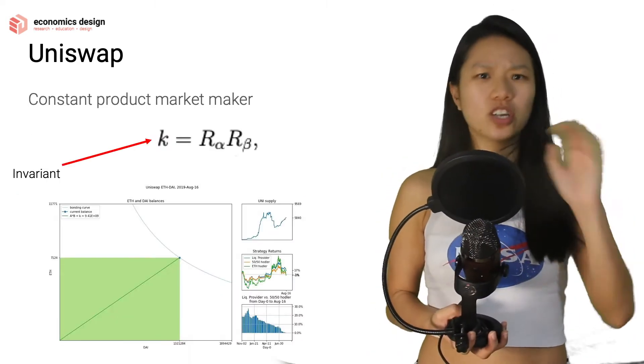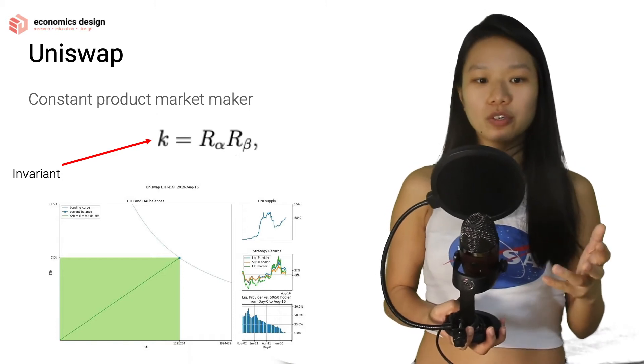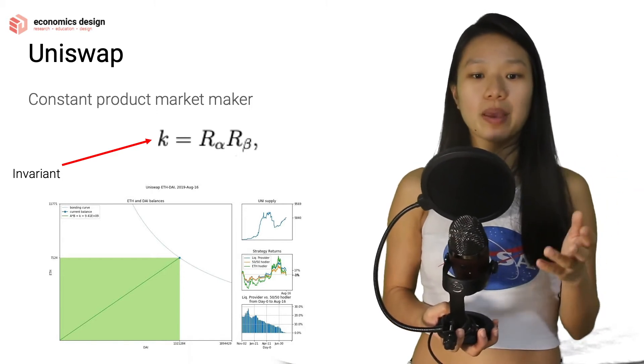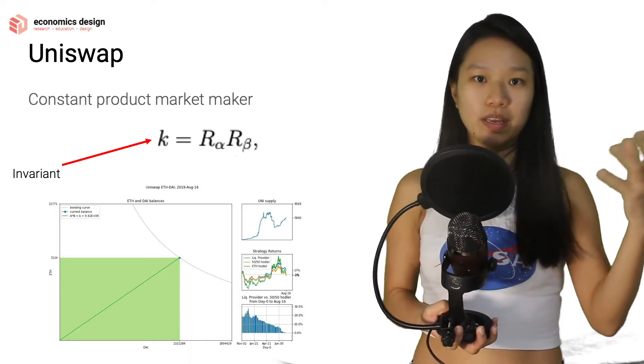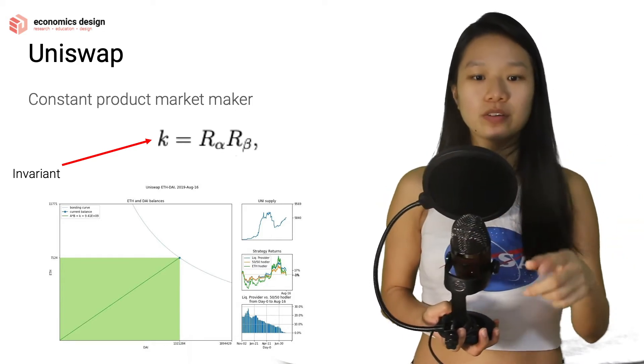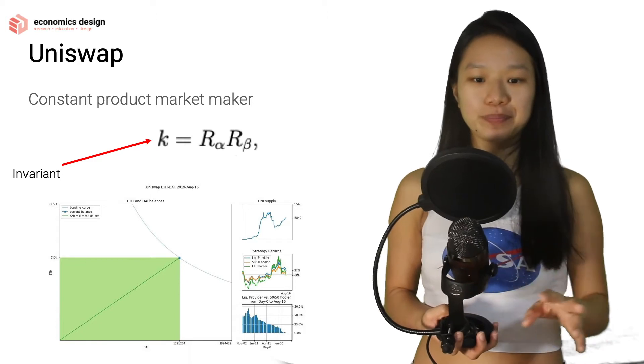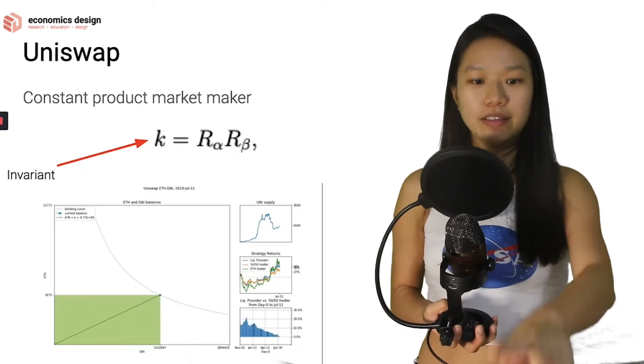With Uniswap, things are a lot simpler. It's a very simple model. They call it the constant product market maker. So it's K equals X, Y. So X will be token A, and Y will be token B. So they use R alpha, R beta.